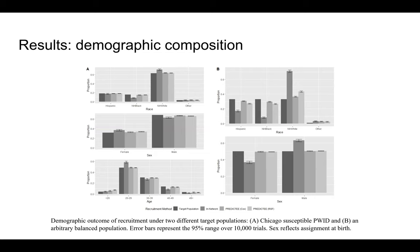When used in a situation where Chicago's susceptible PWID is the target population, PREDIC-D is able to easily correct for the underrepresentation of non-Hispanic Black candidates seen in conventional recruitment, which is a major issue seen in the literature.